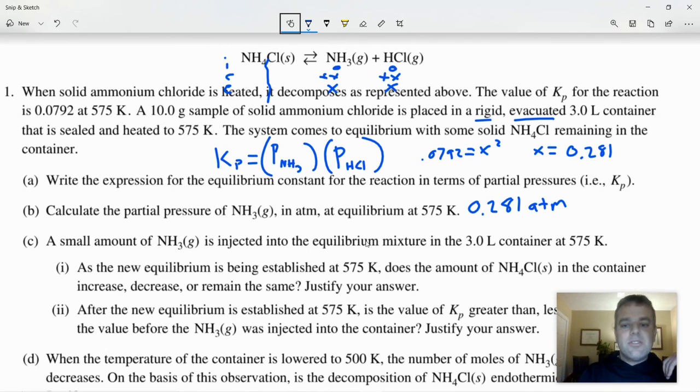Then it says a small amount of NH3 is injected into the equilibrium mixture. As new equilibrium is established, does the amount of ammonium chloride in the container increase, decrease, or remain the same? Well, if we were to calculate Q, we were already at equilibrium. Q is going to be larger than K because the partial pressure of ammonia is now too high. Or if you want to think about it from a kinetic standpoint, by increasing the amount of ammonia present, we have increased the rate of the reverse reaction, which has disrupted our equilibrium position. And so this reaction is going to shift to the reactant side, causing the amount of ammonium chloride to increase.